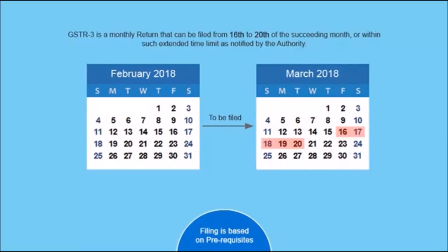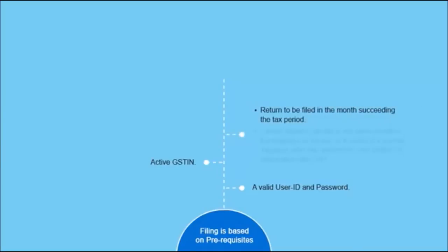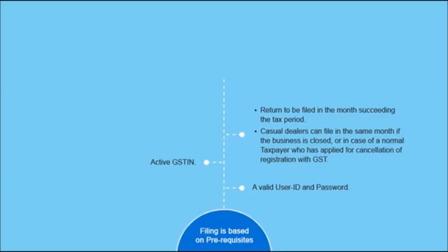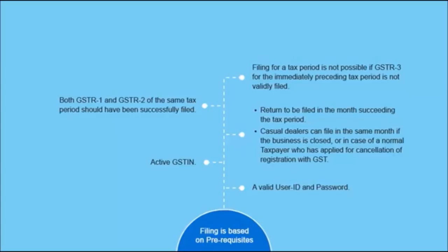Filing this return is based on certain prerequisites: a valid user ID and password for logging in to the GST portal; an active GSTIN during the given tax period; return to be filed in the month succeeding the tax period. However, casual dealers can file in the same month if the business is closed, or in case of a normal taxpayer who has applied for cancellation of registration with GST. Both GSTR 1 and GSTR 2 of the same tax period should have been successfully filed. Filing for a tax period is not possible if GSTR 3 for the immediately preceding tax period is not validly filed.